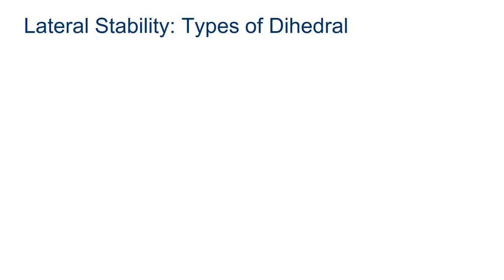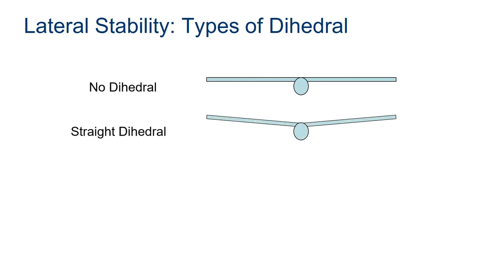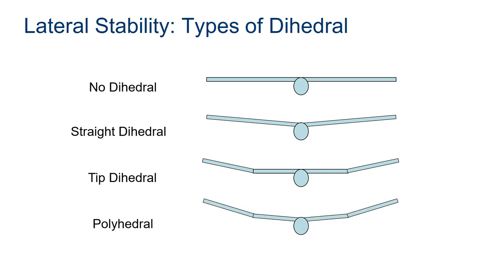So there are some different types of dihedrals. If it's a flat wing like this, there's no dihedral. If you have a point in the middle that both wings rise from, it's straight. If you put the dihedral away from the body, so it's flat in the middle and tilt it up on the ends, it's called tip dihedral. And if you have segments where you have dihedral in the center and further dihedral on the tips, then it's called polyhedral or mini-hedrals.